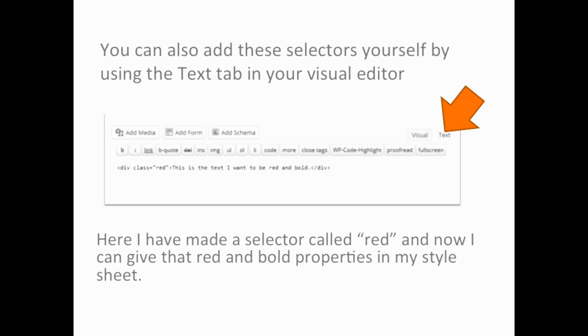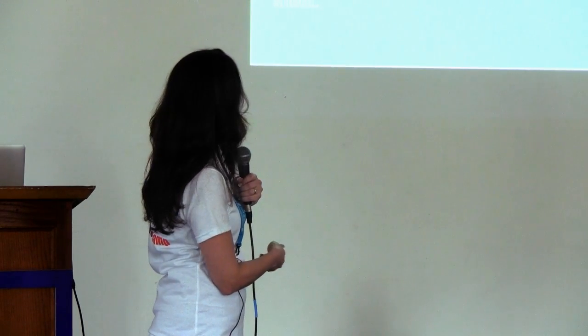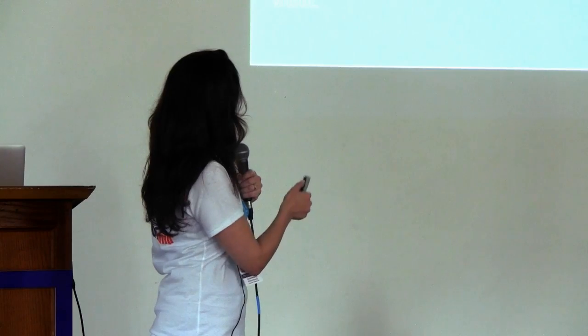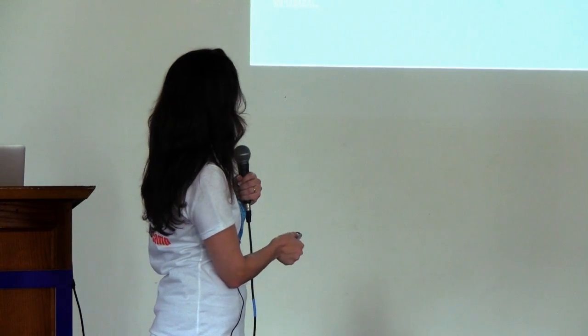These selectors can also be added by you. They're added through your theme — your theme will take whatever you put into your page and post and add the appropriate selectors. But if there's a new selector you want to add, or it's not putting something where you want it, you can always add it yourself. Like if you want something to be red, you put that CSS right around it. When you're doing this, make sure you're using your text tab rather than your visual tab so that you can see the CSS code.